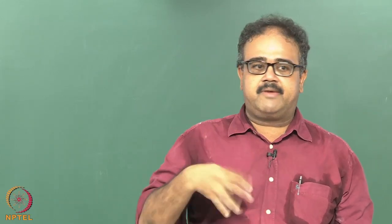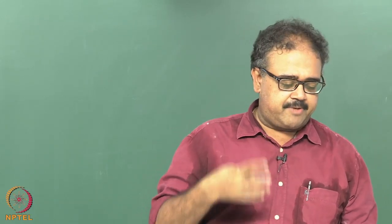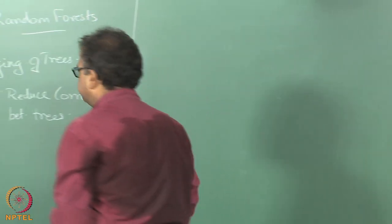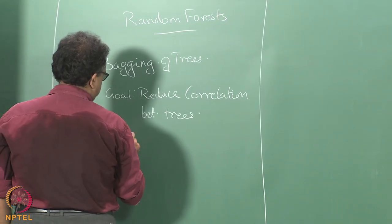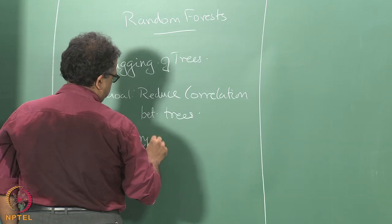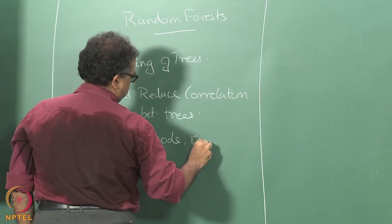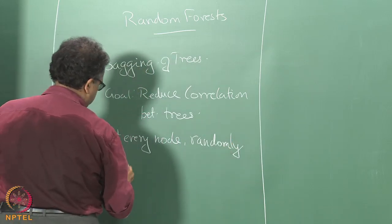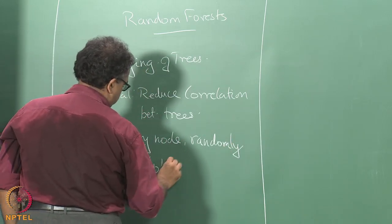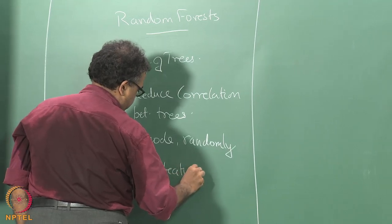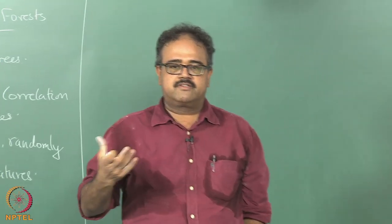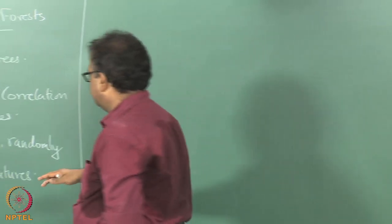You have your data set, then you create a bag by sampling with replacement from that data. Now when you start building the tree on this data set, what you do is at every node, sample some t features from your feature set.